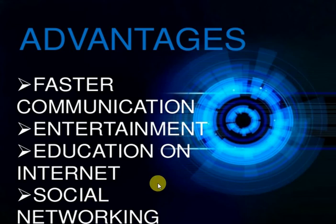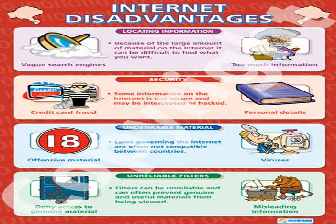Although the internet gives so many advantages, there are some disadvantages of using it too. These are: difficulty in locating information, security issues, undesirable material, and unreliable filters. Since the internet is an ocean of information, there is a large amount of material available, making it difficult to find exactly what you want.